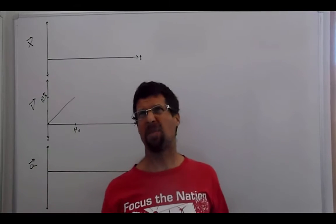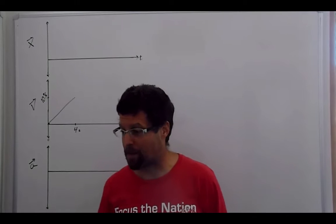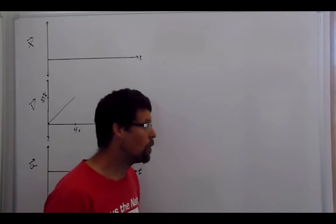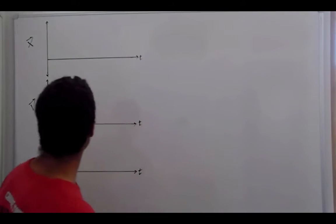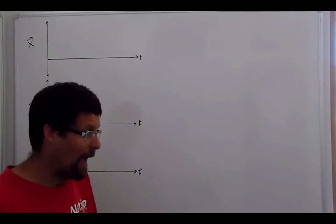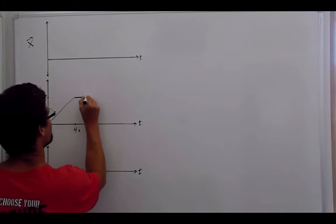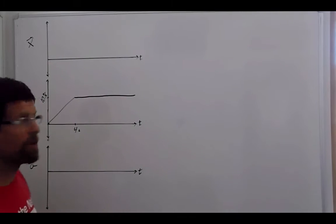Is that reasonable? 10 meters per second is about 22 miles an hour in four seconds. Let's say I get on my bike, go, one, two, three, four. Yeah, I think I could do that. And then after four seconds, I continue along at this speed. And so this would be flat because I continue along over time at 10 meters per second.